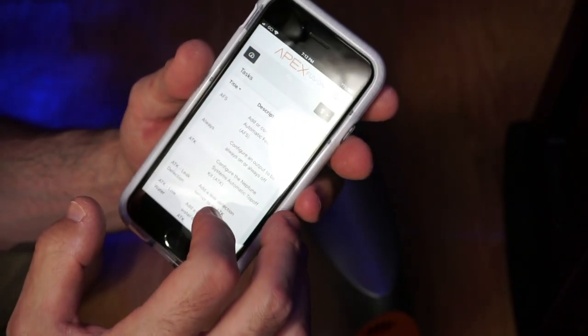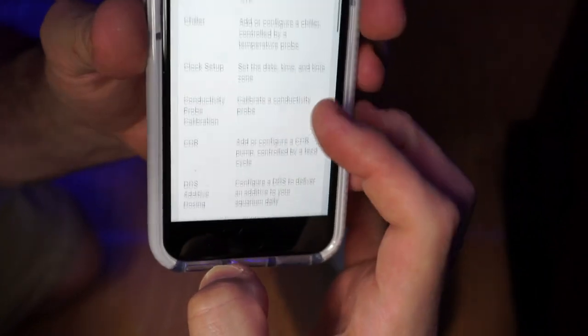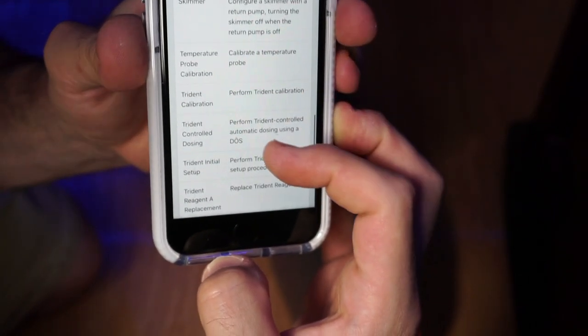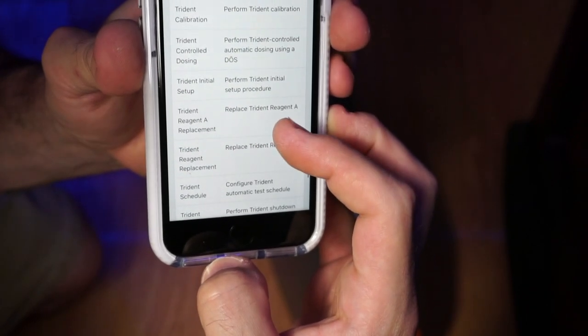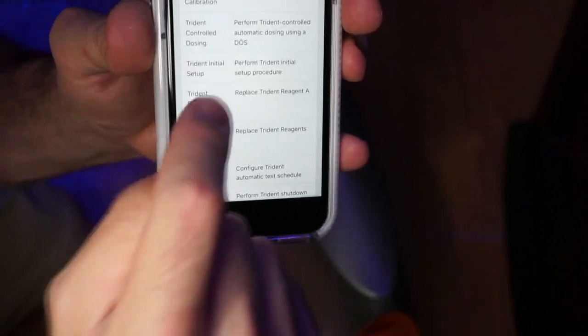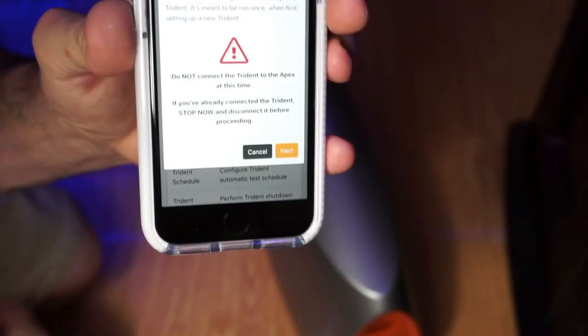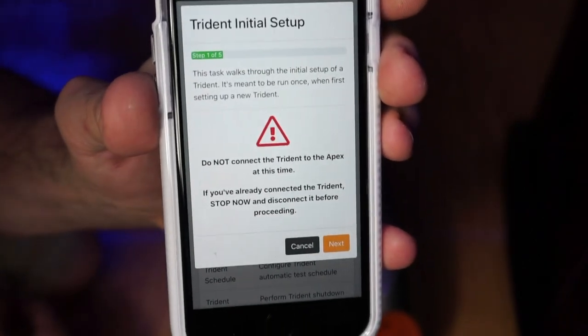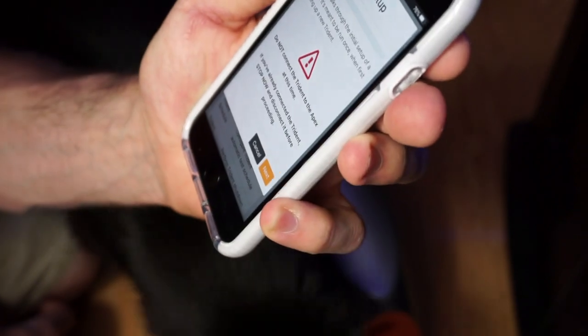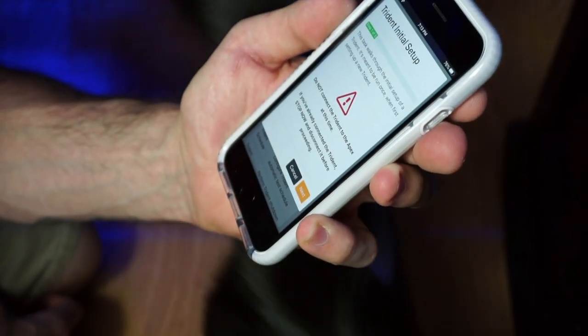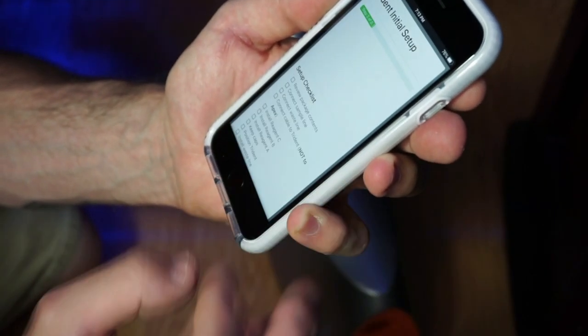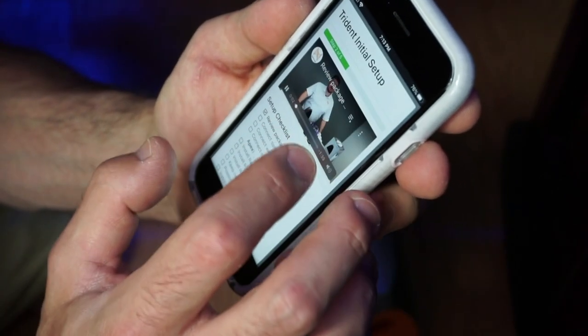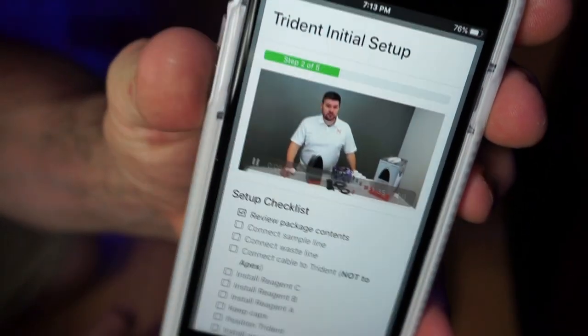Is that a task icon? Hey, that's a task icon. So it's the icon that looks like a clipboard. And we'll select the Trident and go to Initial Setup. Let's go on the list and we'll look for a Trident. Trident Initial Setup. It walks you through the Initial Setup. It's only meant to be ran once when you're setting it up. Do not connect the Trident to the Apex at this time. If you've already connected Trident, stop now and disconnect it. Okay. We don't have it connected.